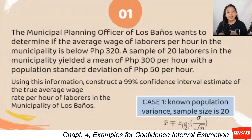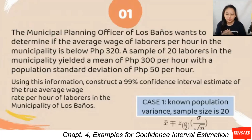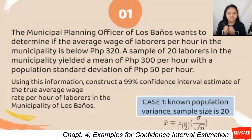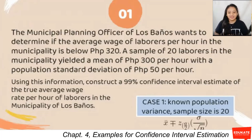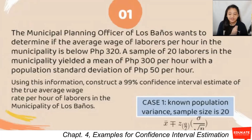Our first example: the municipal planning officer of Los Baños wants to determine if the average wage of laborers per hour is below 320 pesos. A sample of 20 laborers yielded a mean of 300 pesos per hour with a population standard deviation of 50 pesos per hour. We will construct a 99% confidence interval estimate of the true average wage rate per hour.